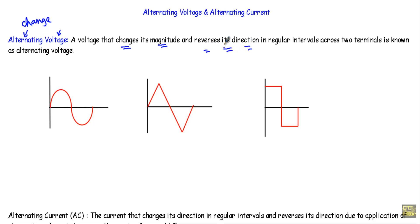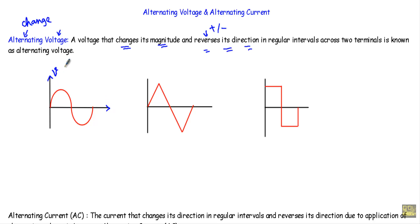Reversing its direction means in one interval it will be in the positive half cycle and in another interval it will be in the negative half cycle, and the positive and negative half cycles come one after another in a regular interval. The most widely encountered alternating voltage varies sinusoidally with time, and we can represent that sinusoidal voltage with a waveform where the y-axis shows the alternating voltage parameter v and the x-axis shows time.